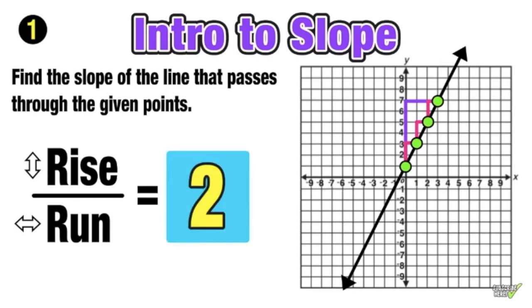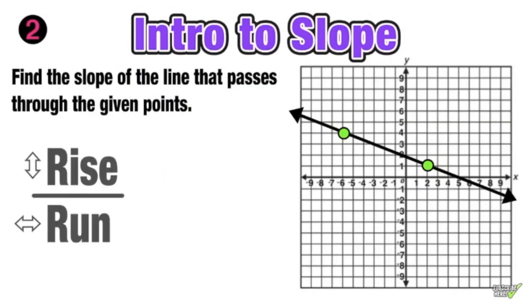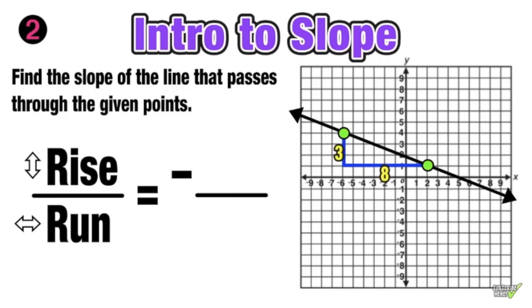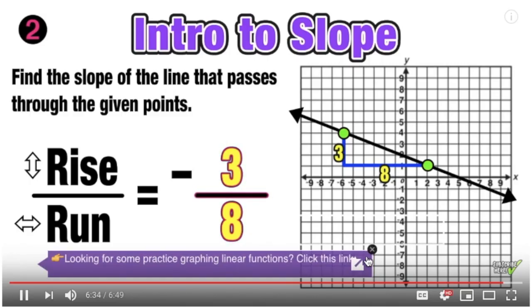This last example is just like the last one except now we're dealing with a different line. Notice that this line decreases from left to right, so its slope will be negative. We want to find rise over run between those two given points. Since the slope is negative, we rise downward and then run to the right. The rise downward was 3 units and the run to the right was 8 units, so the slope of this line is negative 3 over 8, which cannot be reduced.